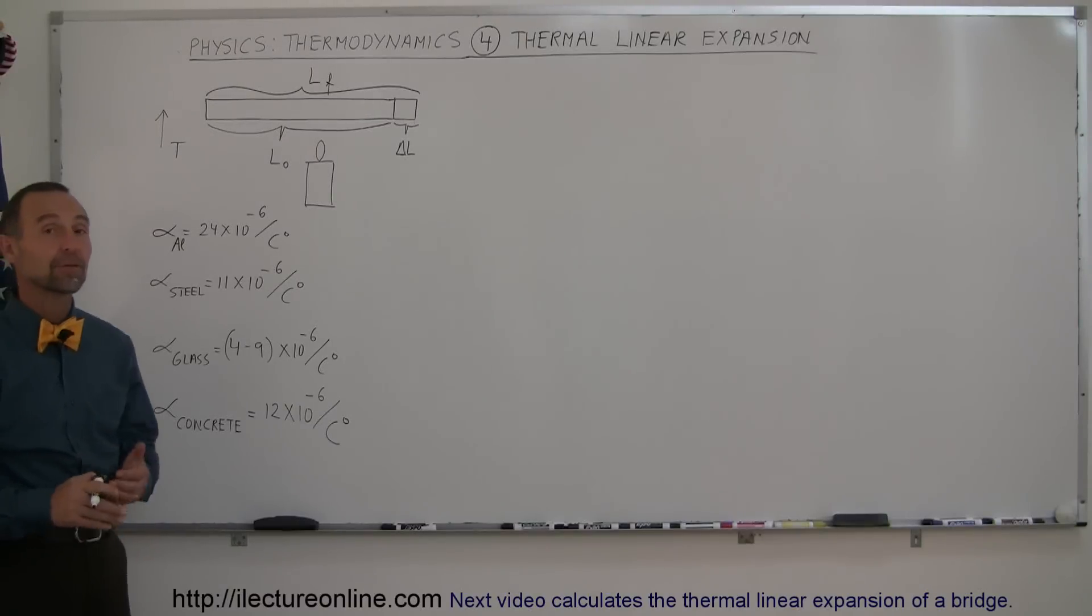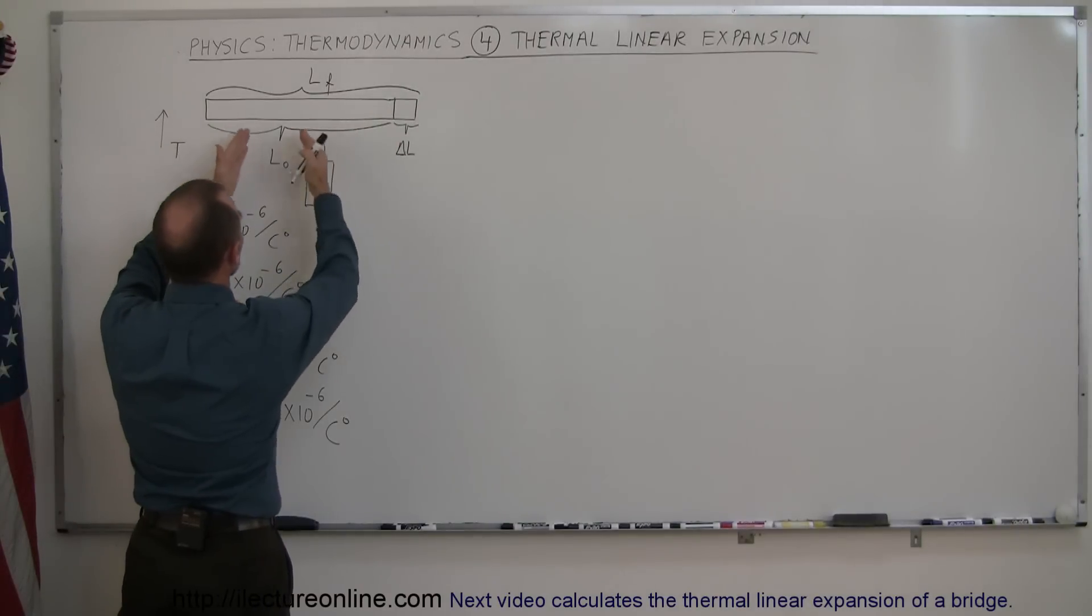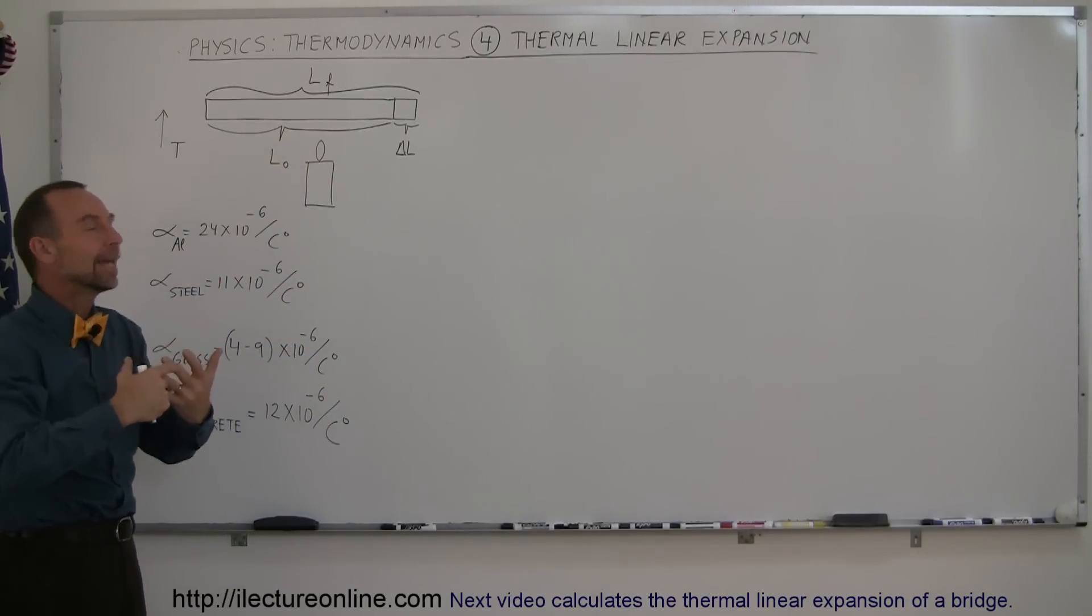Let's now explore the concept of thermal linear expansion. So let's say we have an object like a metal bar of initial length L sub naught. And let's heat up the bar, so we add heat energy to the bar.